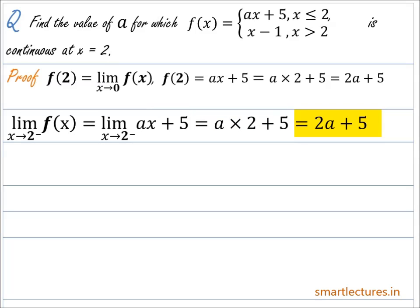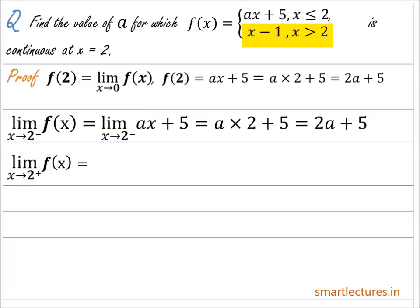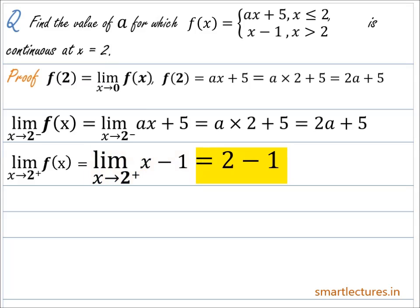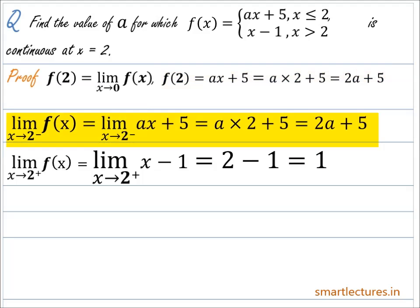Now let's find the right-hand limit. The right-hand limit is limit as x approaches 2 from the right of f(x). From the definition of the function, if x is greater than 2, then f(x) = x - 1. So the right-hand limit equals limit as x approaches 2 from the right of x - 1, which equals 2 - 1 = 1. The right-hand limit is 1. The left-hand limit and f(2) are both equal to 2a + 5.